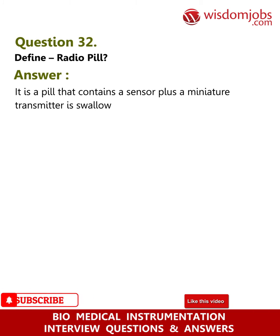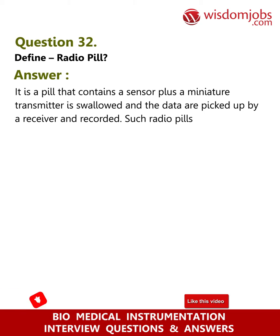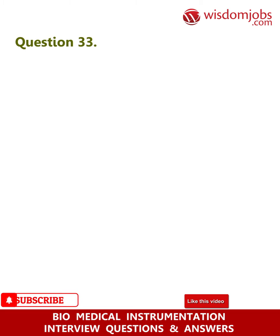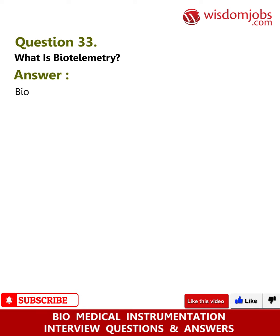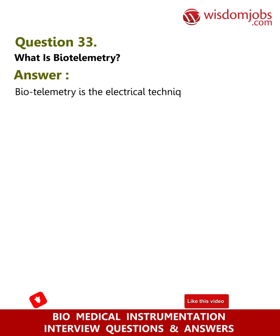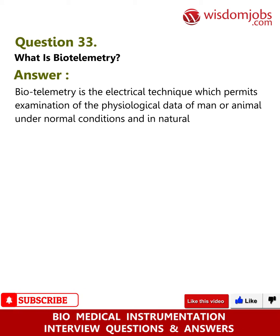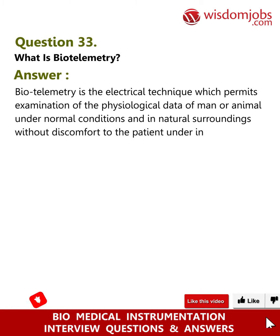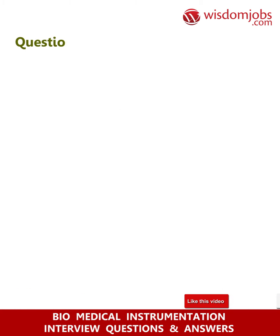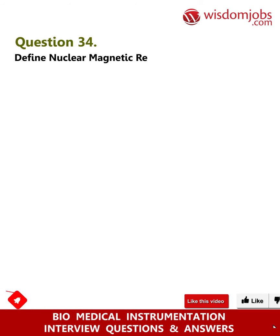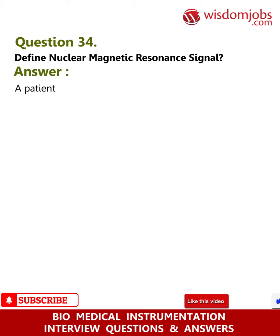Question 32: Define radio pill. Answer: It is a pill that contains a sensor plus a miniature transmitter, which is swallowed and the data are picked up by a receiver and recorded. Such radio pills are used to monitor stomach pressure or pH. Question 33: What is biotelemetry? Answer: Biotelemetry is the electrical technique which permits examination of the physiological data of man or animal under normal conditions and in natural surroundings without discomfort to the patient under investigation.